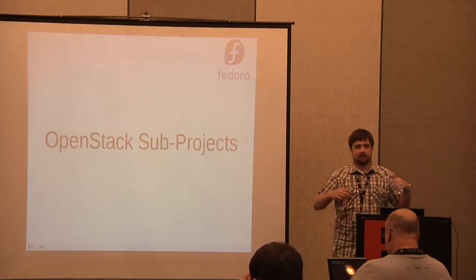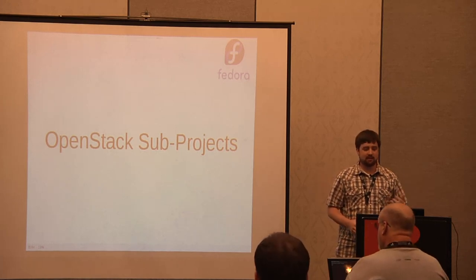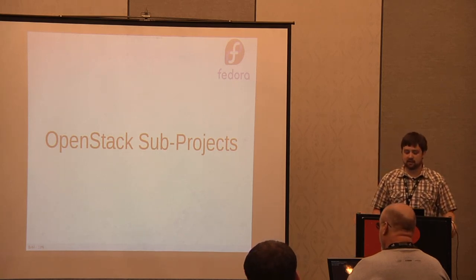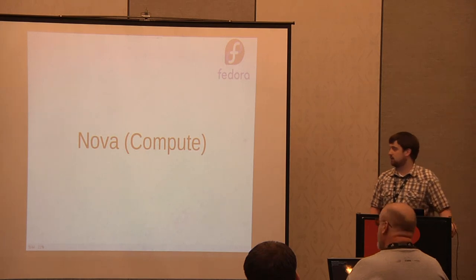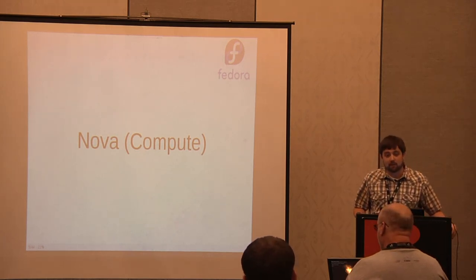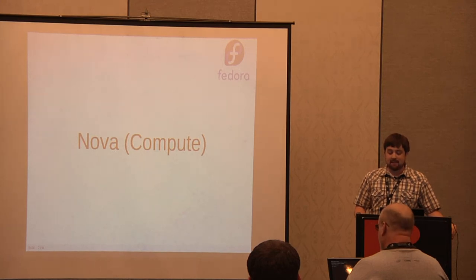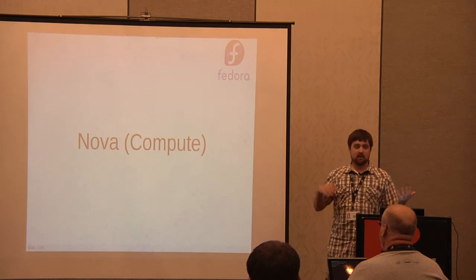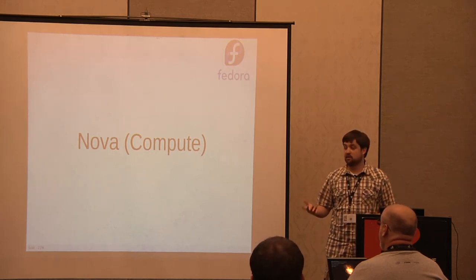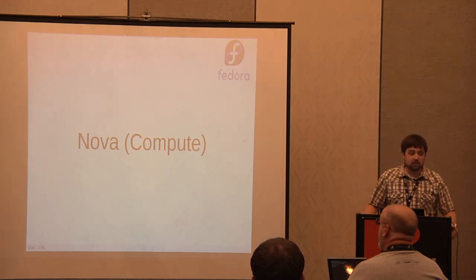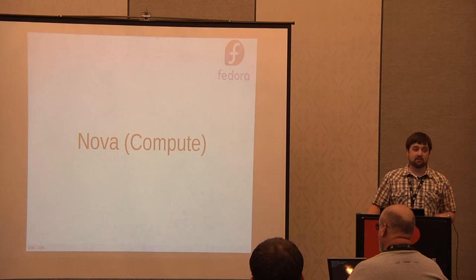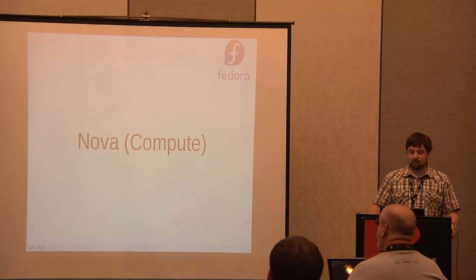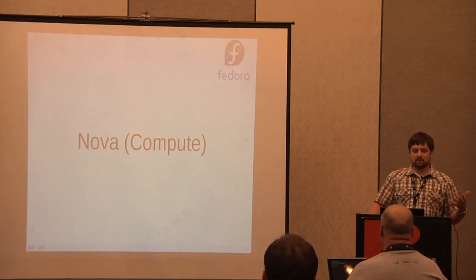OpenStack is a sort of umbrella project — it's not just one piece of code that you get, it's a collection of projects. Nova is the project I primarily work on in OpenStack. It's the compute service. If you're familiar with Amazon's services, Nova would be somewhat analogous to Amazon EC2. It provides you the virtual machines, networking amongst those virtual machines, storage for the virtual machines, and that sort of thing. It's the largest project within OpenStack, and a lot of the other projects sort of come out of Nova.